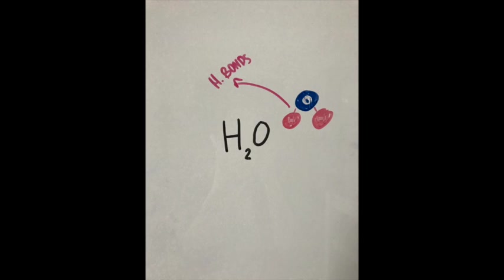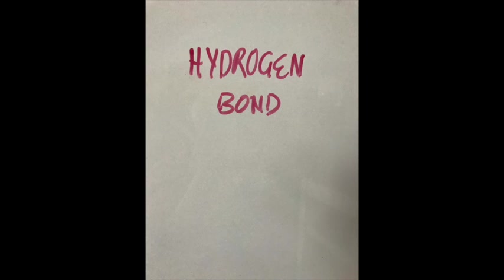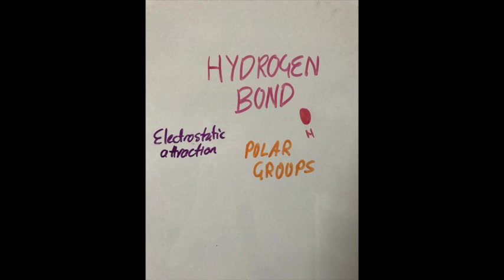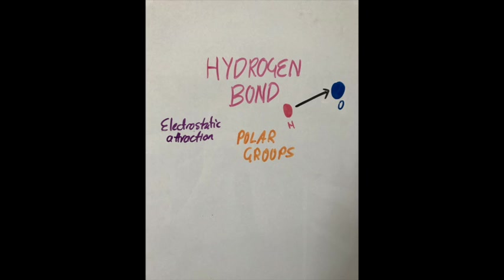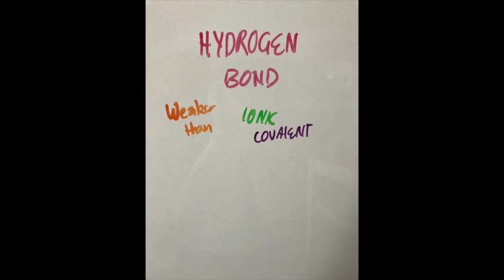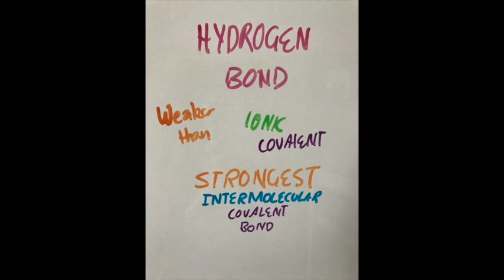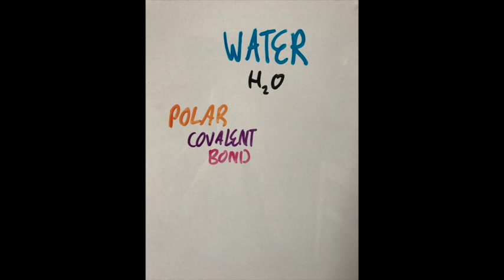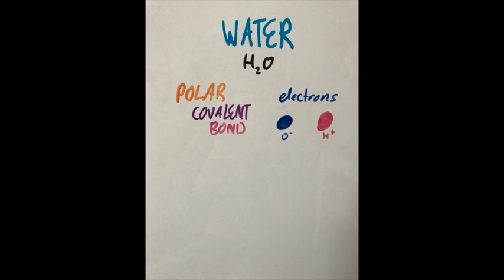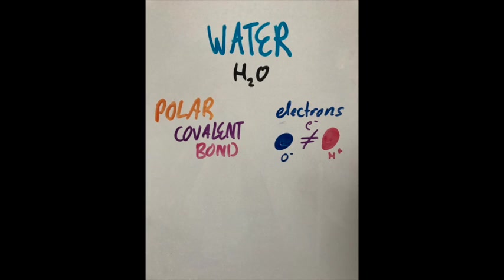H2O molecules attract through hydrogen bonding. Hydrogen bonds are electrostatic attractions of polar groups where a hydrogen atom forms a covalent bond with the electronegative atom, such as oxygen. Although they are weaker than ionic and covalent bonds, hydrogen bonds are one of the strongest intermolecular covalent bonds. Water is an example of a polar covalent bond, where the electrons of the two non-metals, oxygen and hydrogen, are unequally shared.